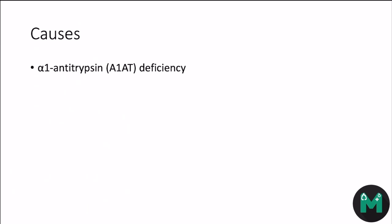There's a range of causes of COPD. Firstly, there's alpha-1 antitrypsin deficiency, which is a genetic cause. Smoking is one of the biggest risk factors for developing COPD because of the chronic inflammatory effects of the particles, chemicals, and reactive oxygen species.